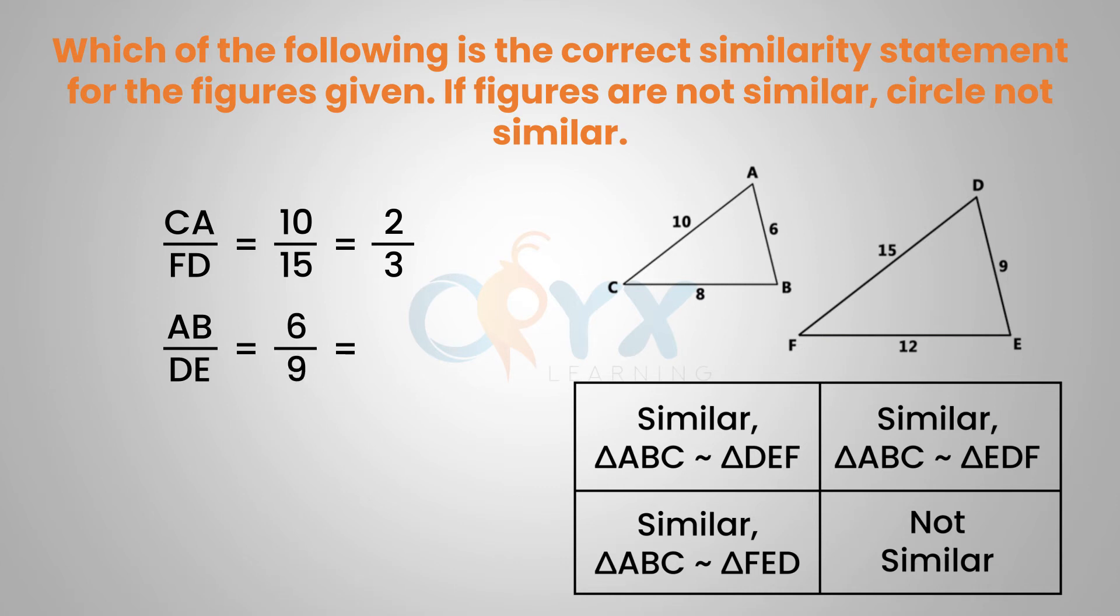BC over EF, which equals 8 over 12, which is also 2 thirds. Since all of them reduced to 2 thirds, they are proportional, which means the triangles are similar and triangle ABC is similar to triangle DEF.